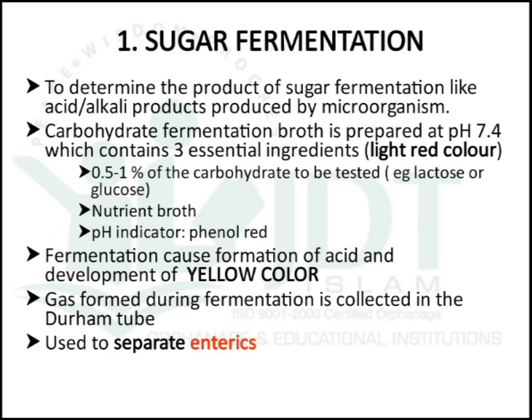The first test is the sugar fermentation test, used to determine the products of sugar fermentation — like acid or alkali — produced by the microorganism. It contains three essential ingredients: 0.5 to 1% carbohydrate to be tested (like lactose or glucose), a nutrient growth medium, and pH indicator phenol red. Fermentation causes acid development, giving a yellow color, and gas formed can be collected in a Durham tube.